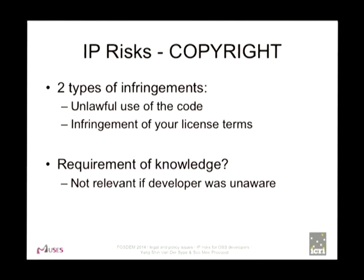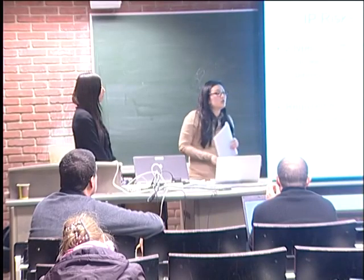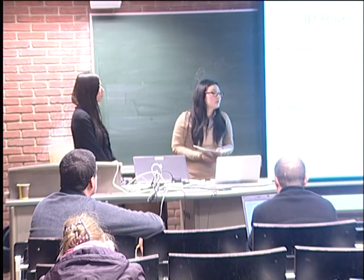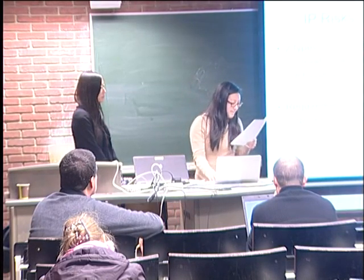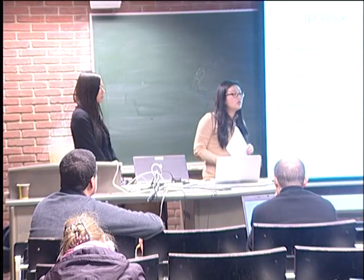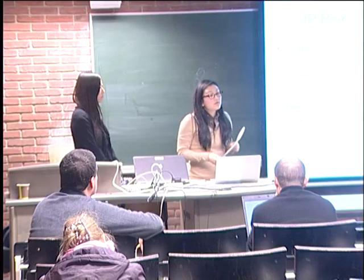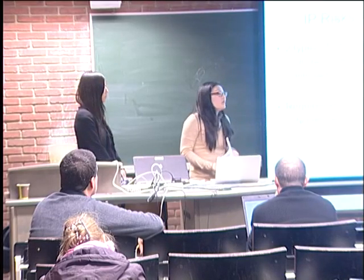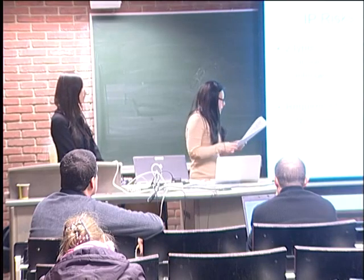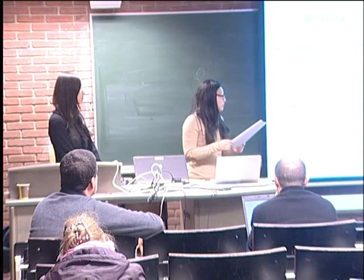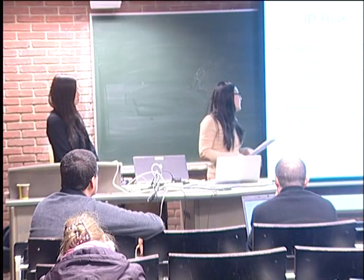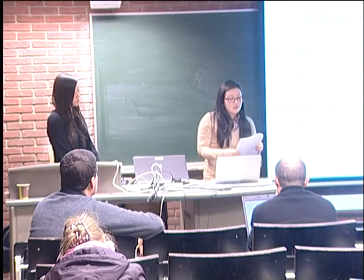When will you have an infringement of copyright? You have two types of infringements: either your code is an unlawful use of code, or you have an infringement of your license terms. A license will not be honored, for example, when you were required to apply a notice and you didn't. The question of whether a developer was aware that he was infringing someone else's code could play a role in copyright. Because copyright doesn't require any formality and comes into existence following the mere creation, it's not easy to know if something is protected by copyright. However, the Copyright Act does not require that the infringer has knowledge of the infringement or the copyright, so it is not an exception to copyright.